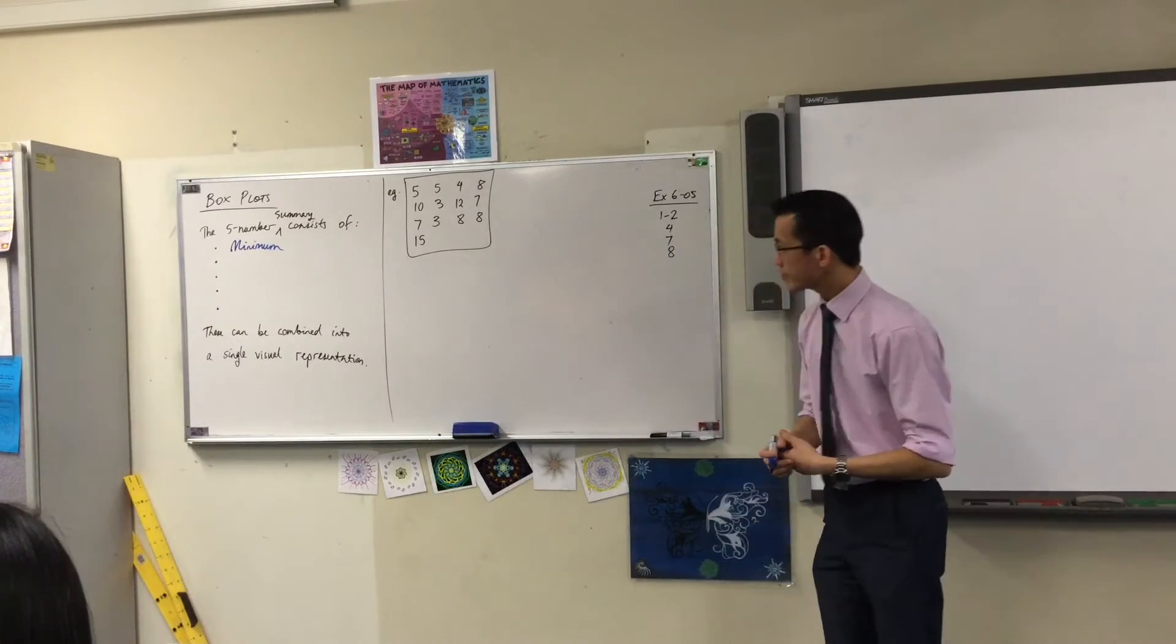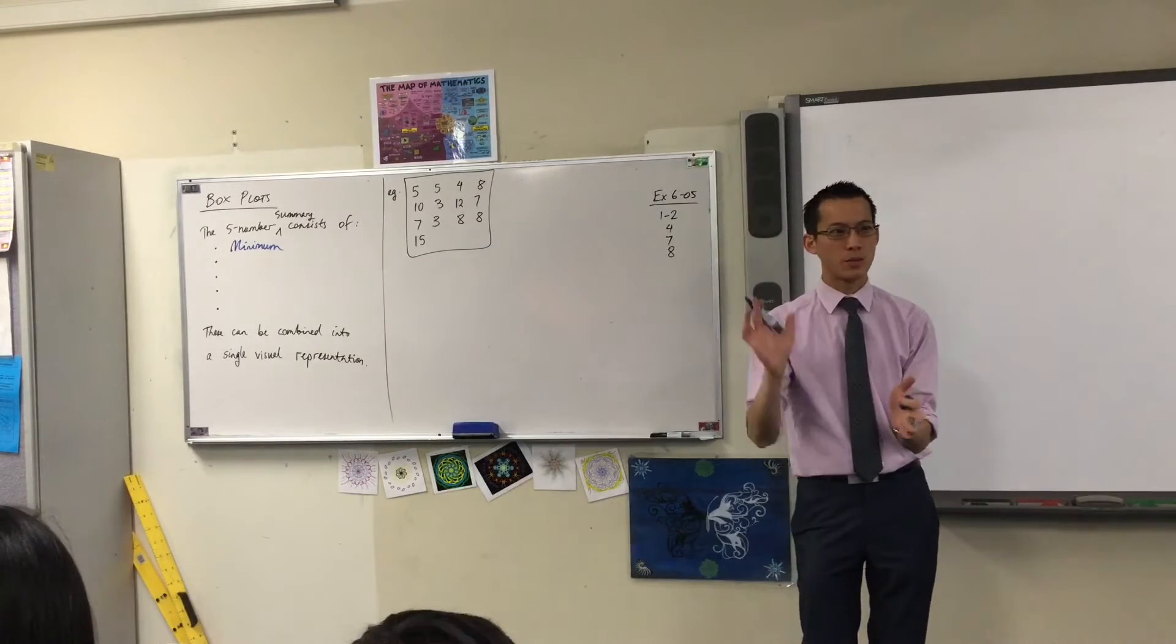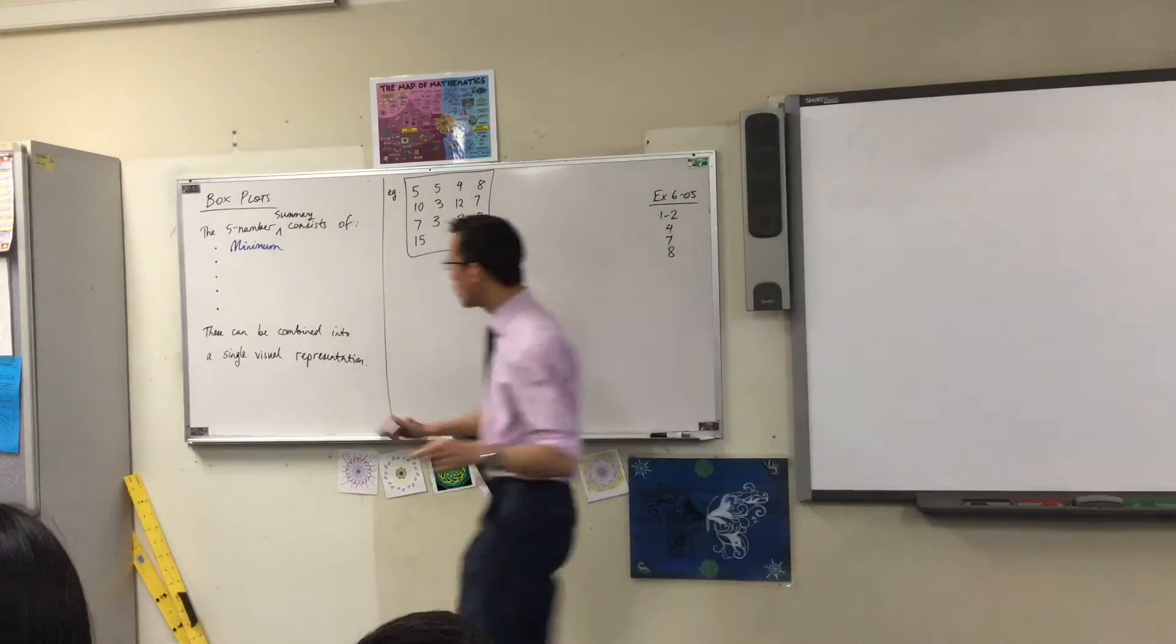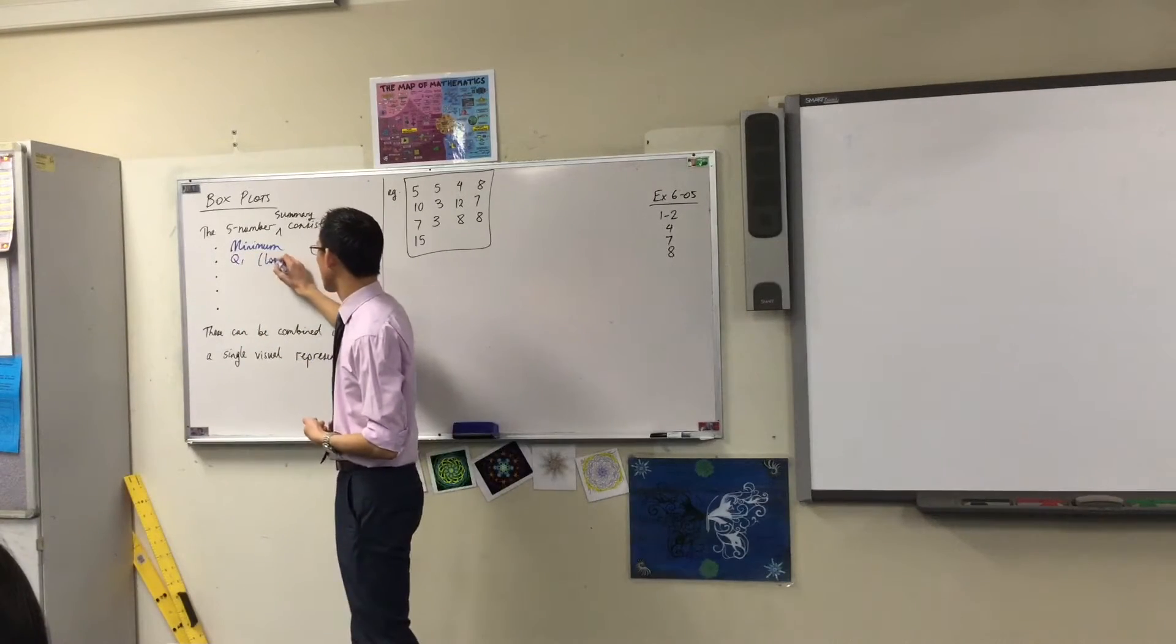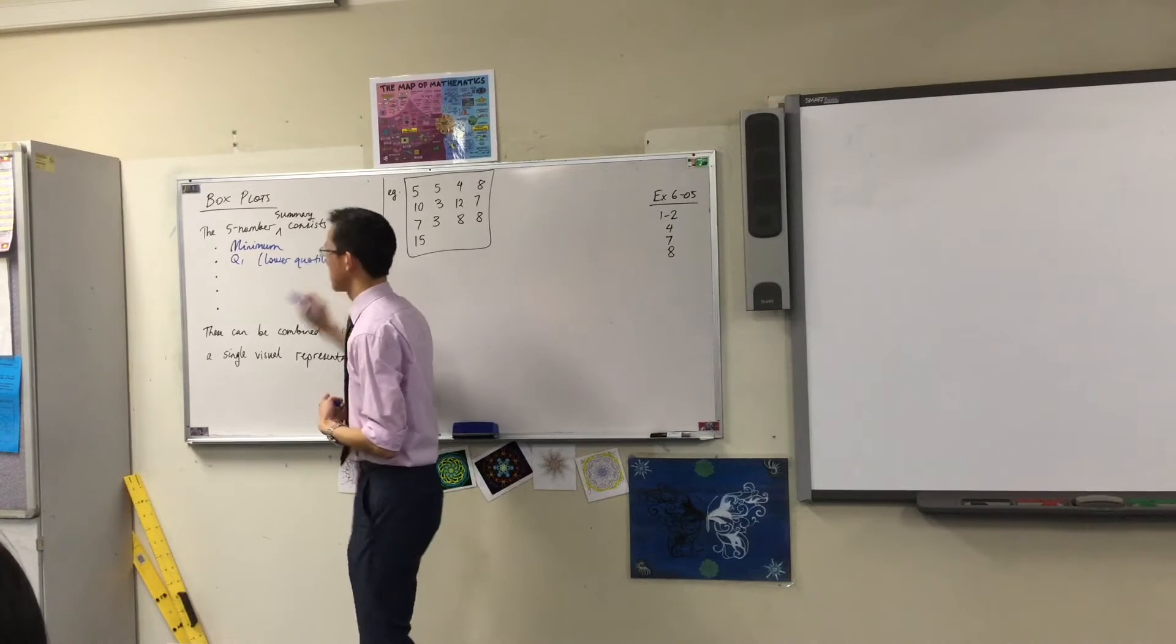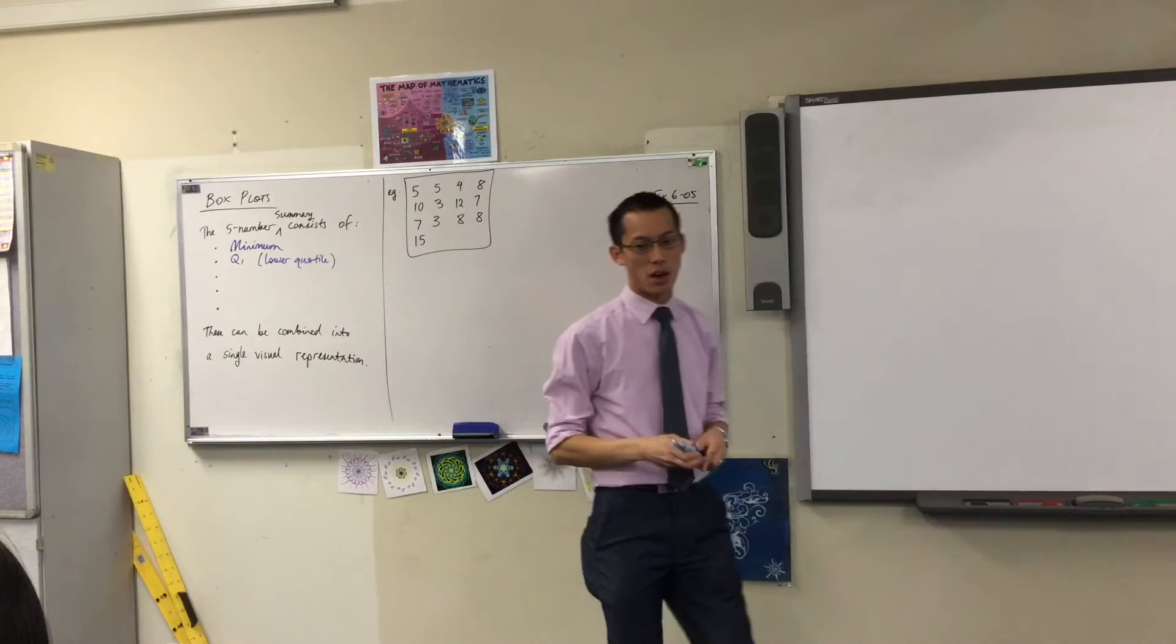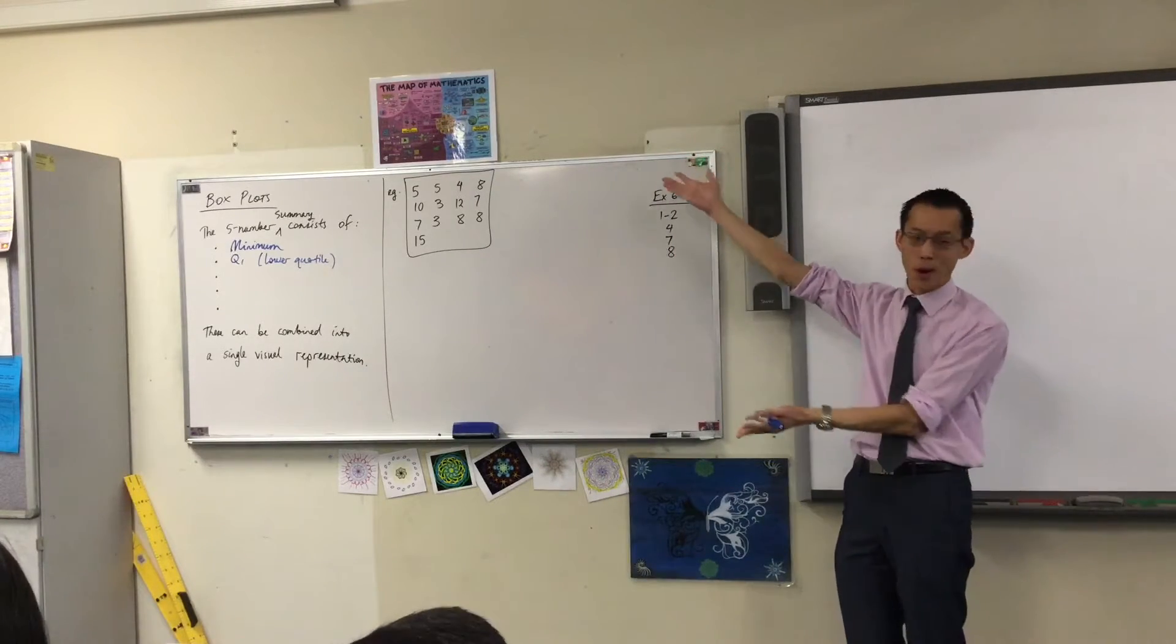Then we go closer towards the middle. What do we encounter as we climb up? We hit the lower quartile which is indicated by Q1. I'm actually going to write lower quartile there. You may recall when Mr. Dennis was introducing this, Q1 is often written as QL, L standing for lower.